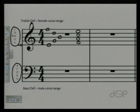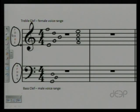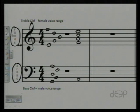On the bass clef, the bottom line is G, then the next lines are B, D, F, and A. The spaces in the bass clef are A, C, E, and G.